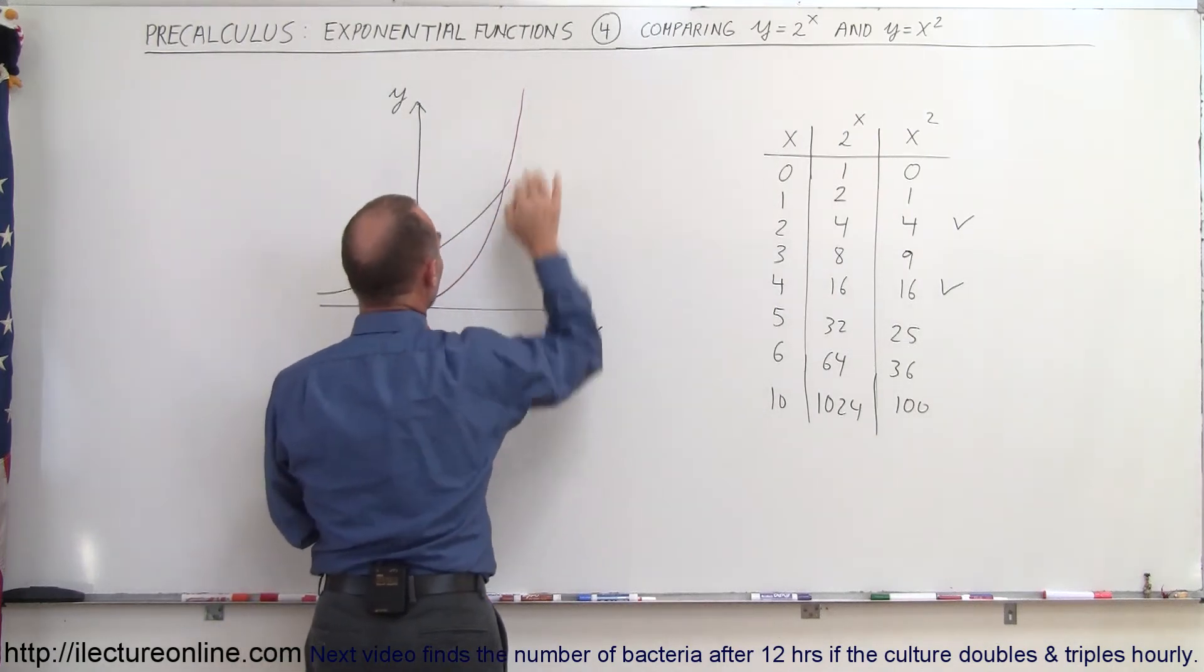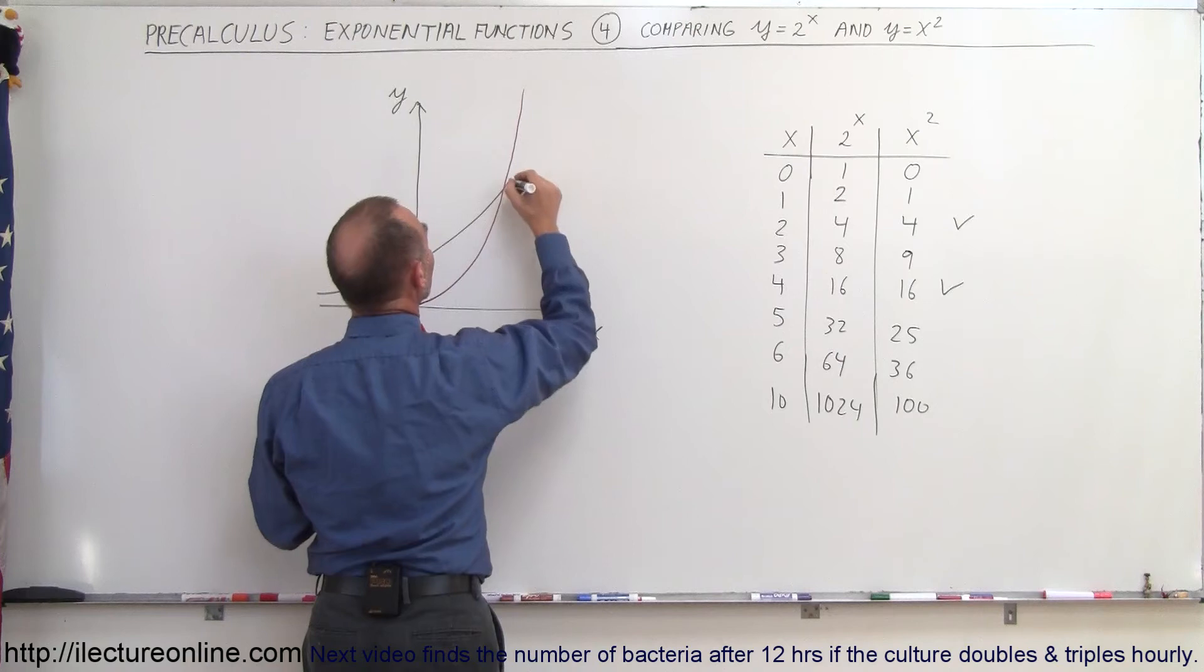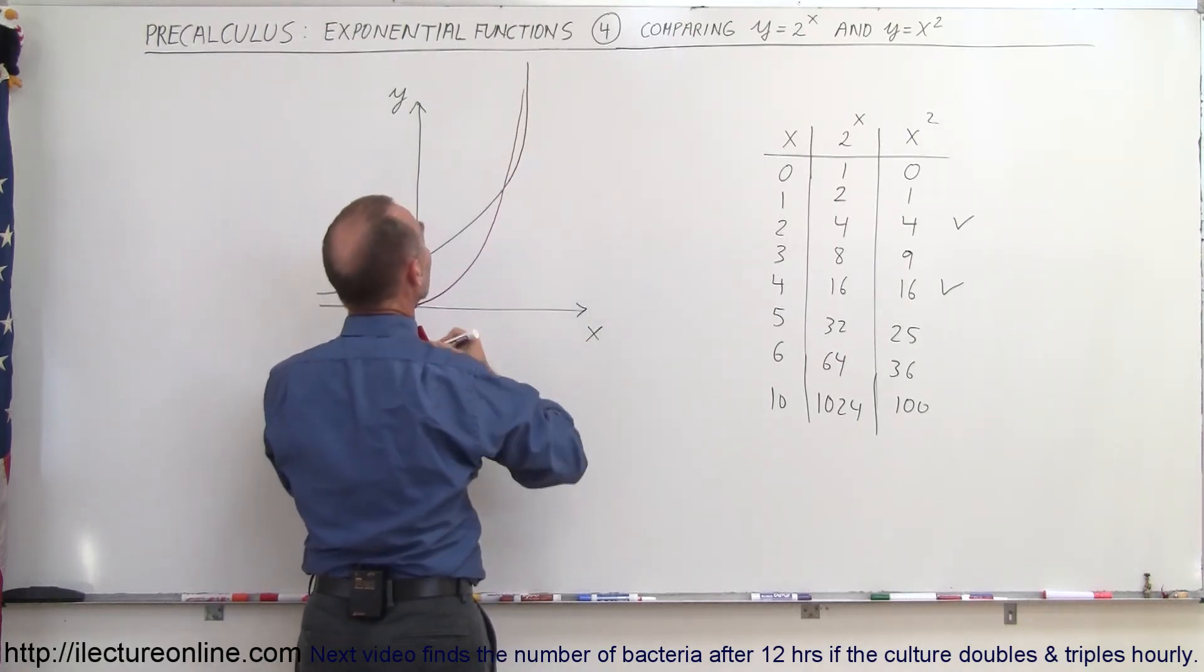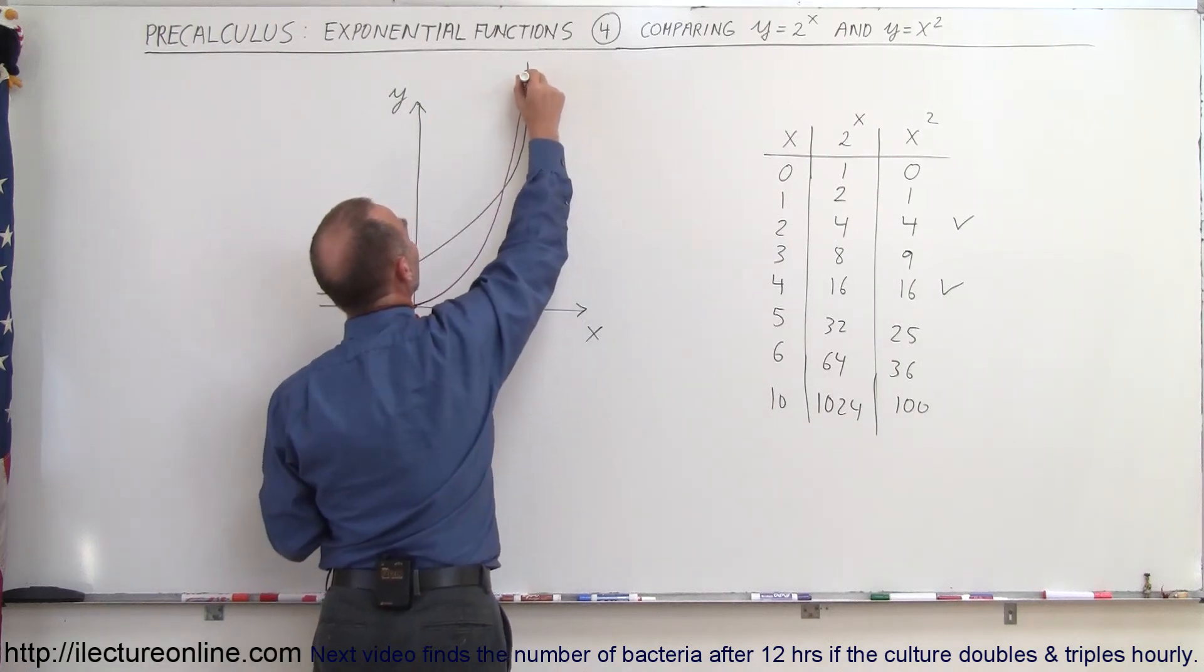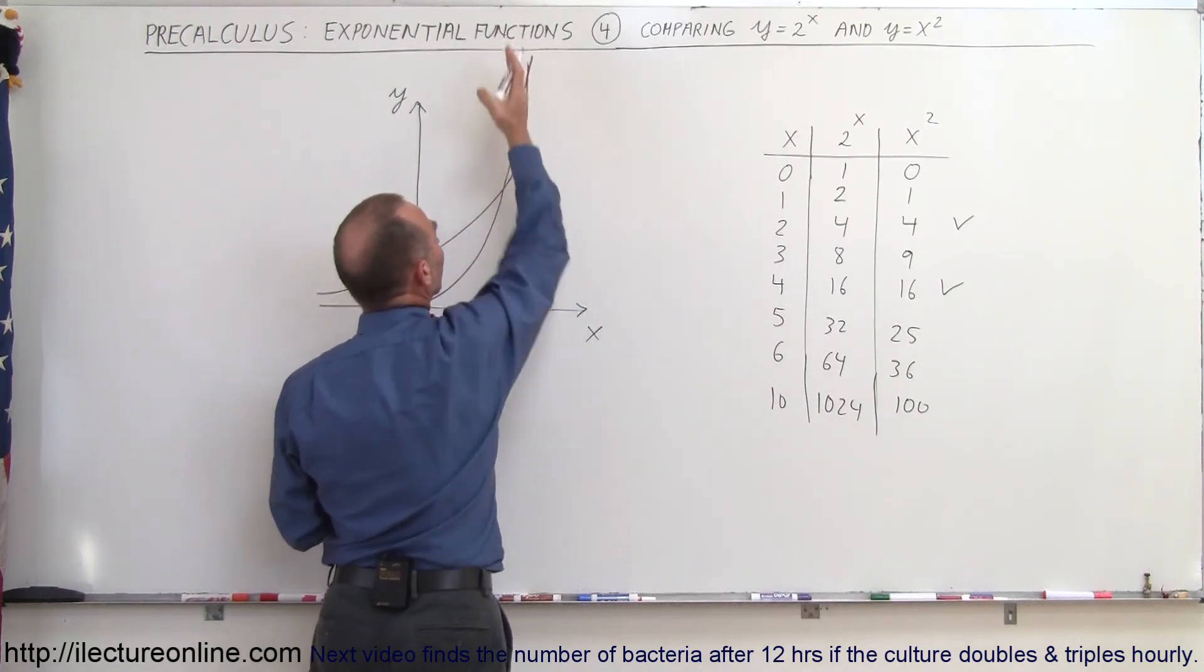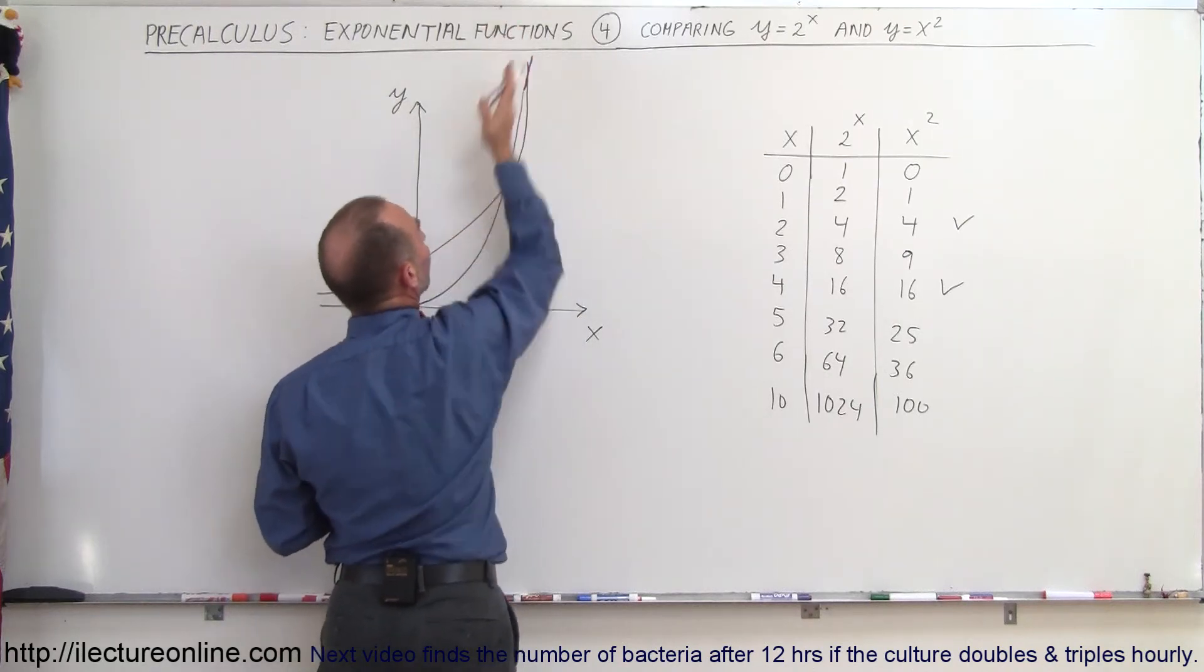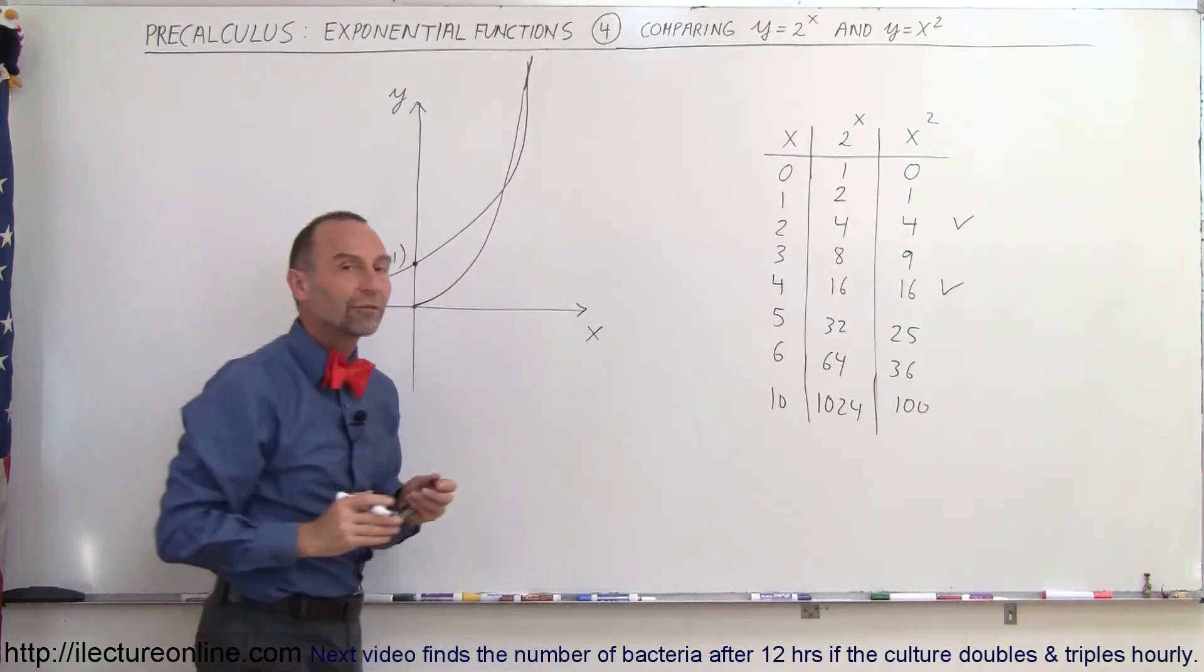But then, let me go ahead and erase that here. Then you can see that the exponential function begins to grow faster and faster and faster and starts crossing over the quadratic equation. I got to finagle a little bit right here, but it starts crossing over. And then you can see that the exponential function will grow much more quickly than the quadratic function.